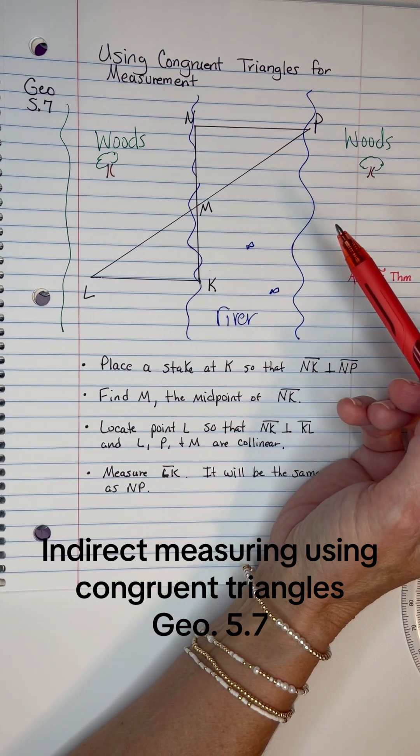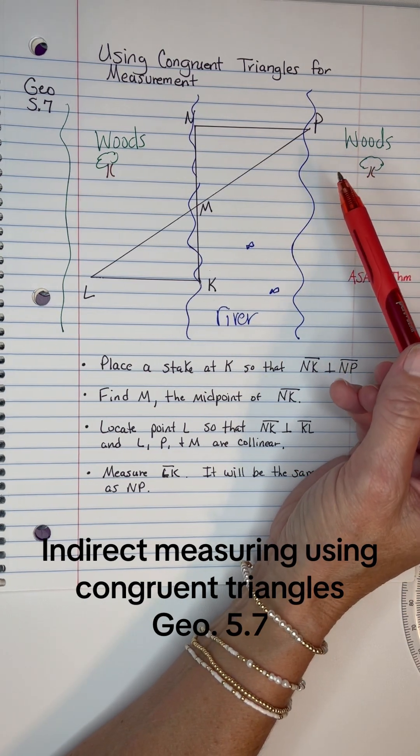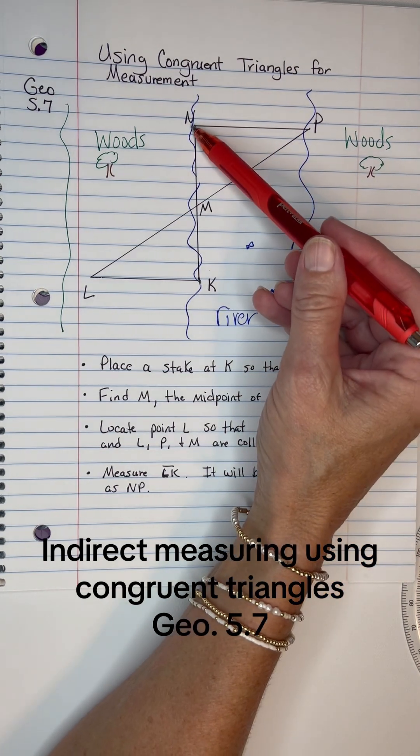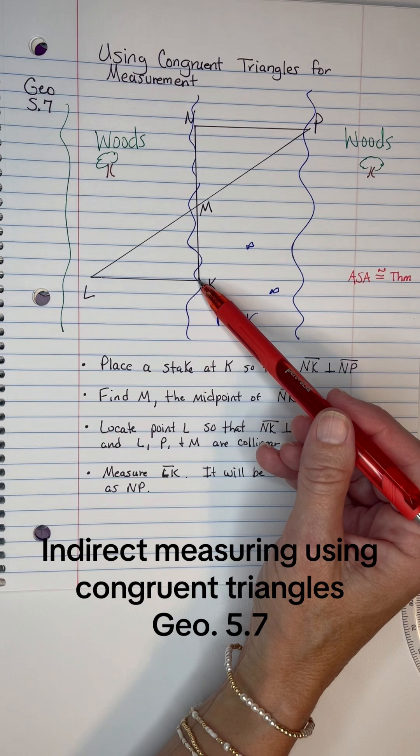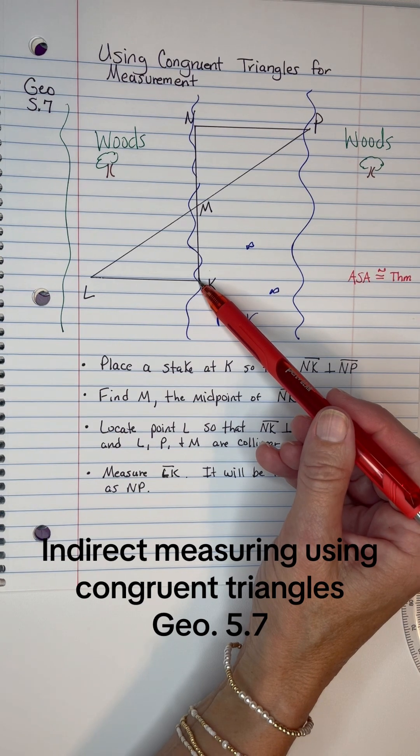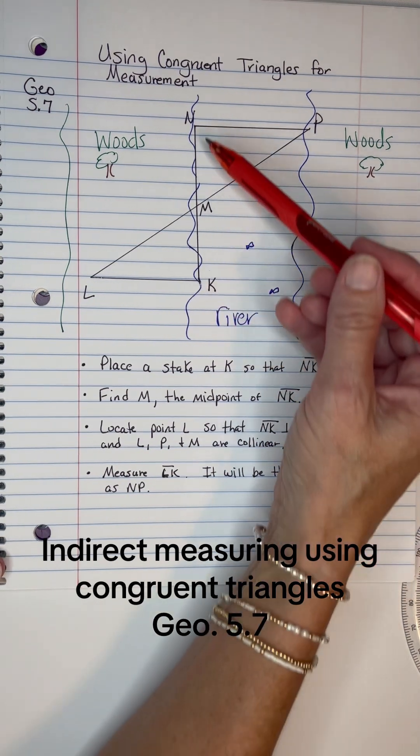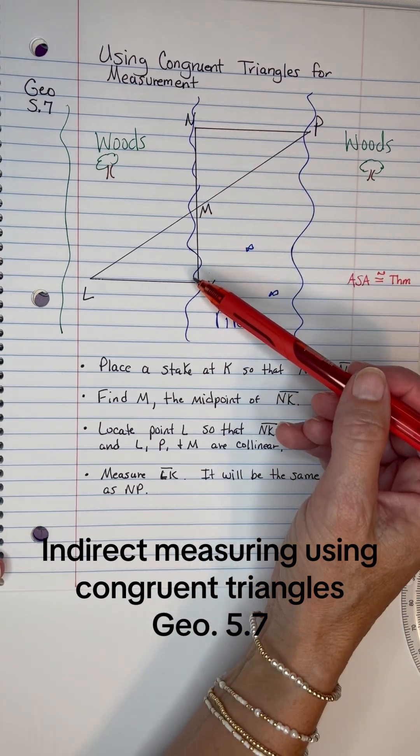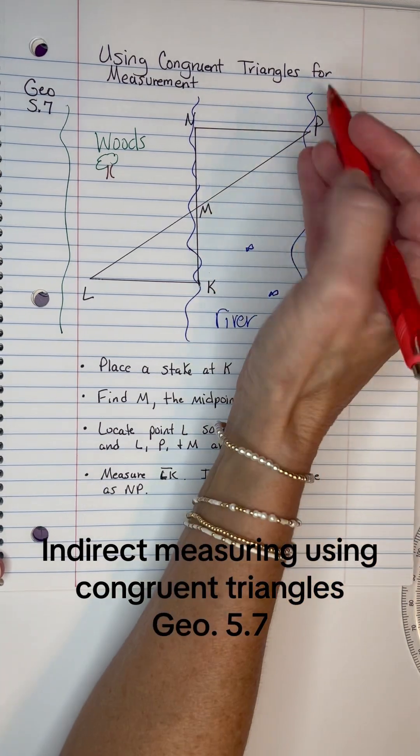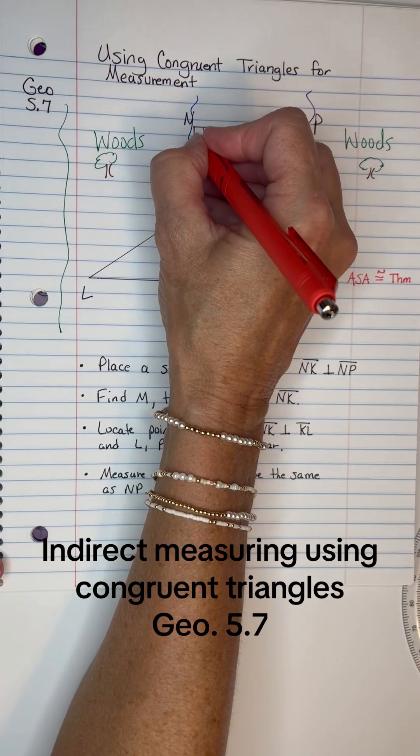So what we'll do is put a stake down at N, and then we'll go straight down the edge of that river and put a stake at K. The thing is, we need NK—like a rope or something—to be perpendicular to NP.